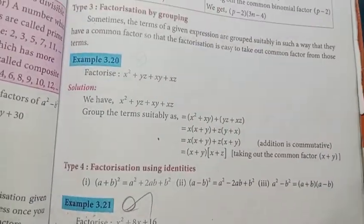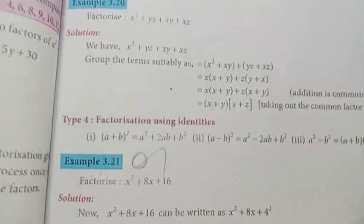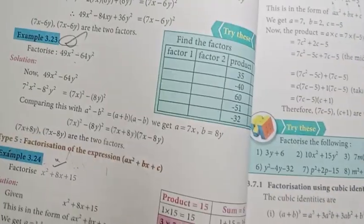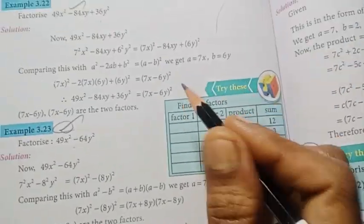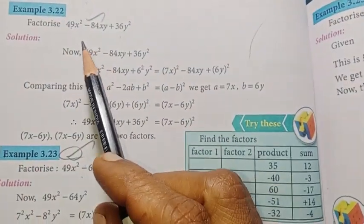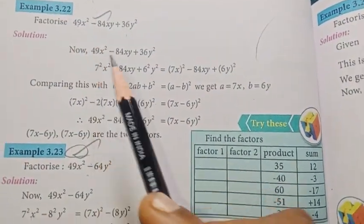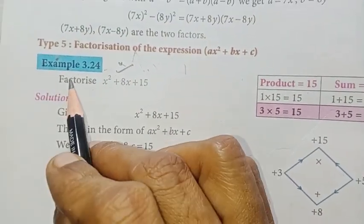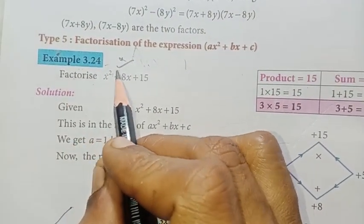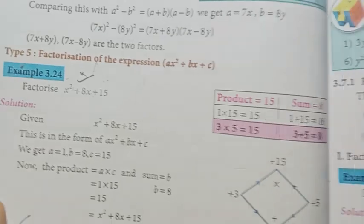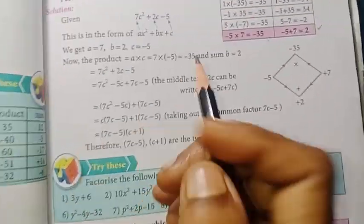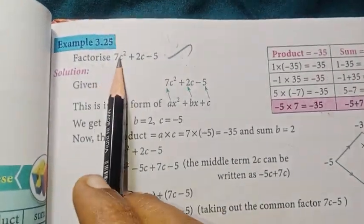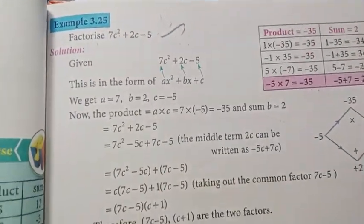Next, page number 93: example 3.21 important. Page number 94: example 3.22 important, example 3.23 important — it is a previous year question. Example 3.24 — previous year, second district. Example 3.25 important.